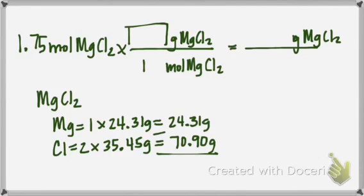And then if you remember, you're going to add those together. So once I do my addition, my molar mass is going to be 95.21 grams of magnesium chloride.